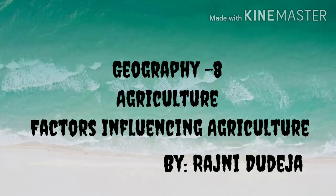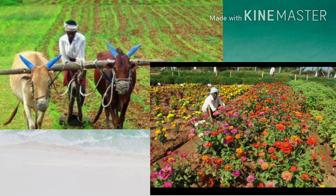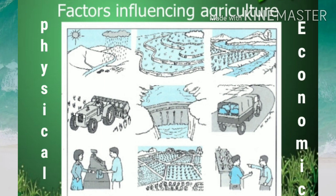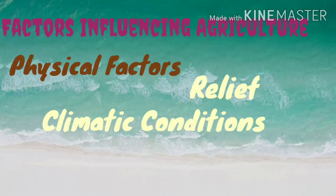Hello viewers, let us continue with the chapter of geography which is agriculture. Here we are going to start the new topic: factors influencing agriculture. The methods of farming, types of crops grown, and the amount of production vary from place to place, and this is due to changing environmental conditions. Some of the physical and economic factors which greatly influence agriculture are relief, climatic conditions, soil, and economic factors.